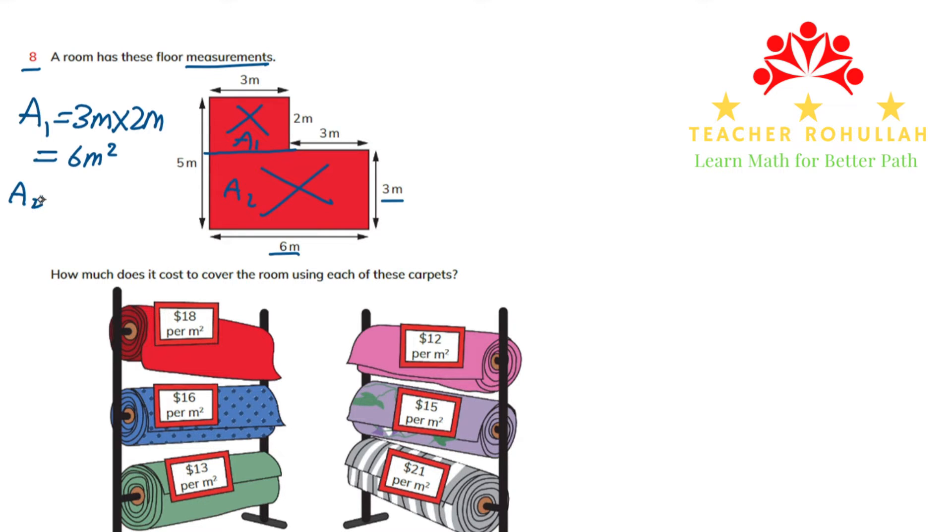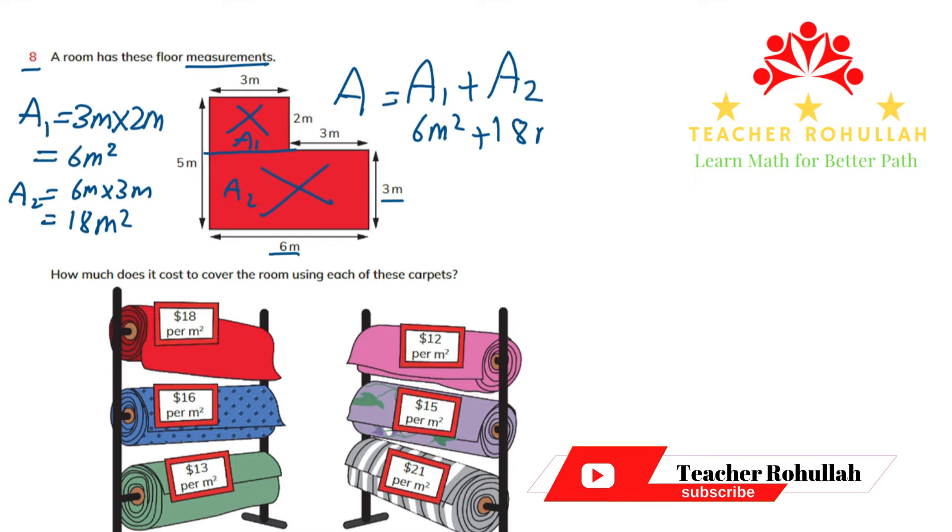To find A2 we multiply 6 meters by 3 meters. So 6 meters times 3 meters will be equal to 18 square meters. Now the area of the whole shape will be equal to 24 square meters.